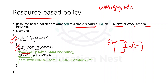Under Principal, we have AWS and the account number. So anyone from this particular account is allowed to access this S3 bucket. The action is PutObject, meaning they can upload objects into the S3 bucket. The resource is the S3 bucket called document-example-bucket, and this resource-based policy would be attached to that bucket itself.